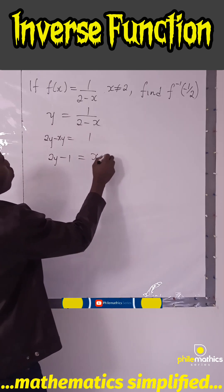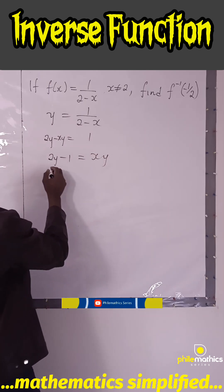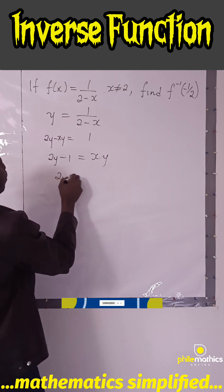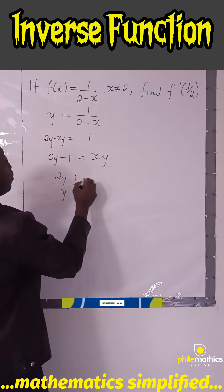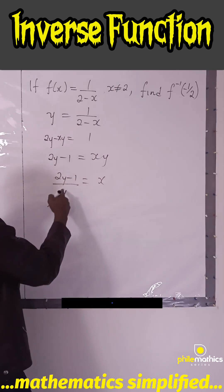Since 2y - 1 = xy, divide both sides by y to get (2y - 1)/y = x. So this is the inverse function.